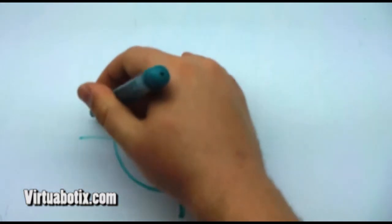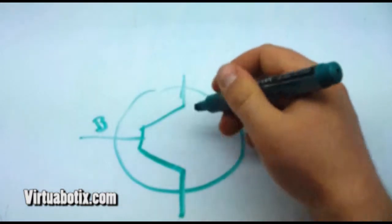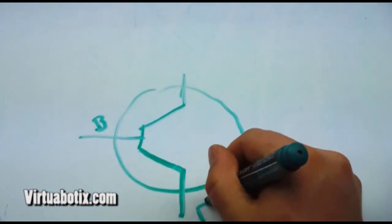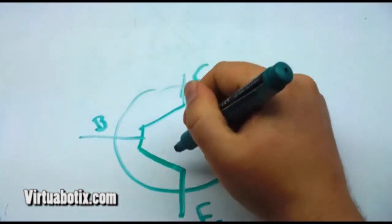So let me go ahead and first explain the transistor. You have two basic types of transistor. The first type of transistor is an NPN.